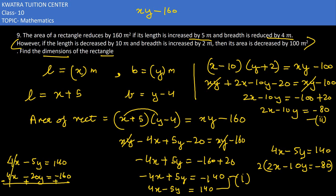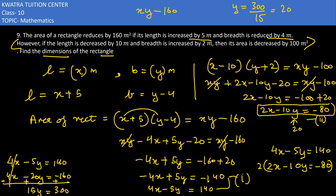After elimination, -5y + 20y = 15y, and on the right side 160 + 140 = 300, so y = 300/15 = 20. Substituting y = 20 into either equation, we get x = 60 meters. So the dimensions of the rectangle are length = 60 meters and breadth = 20 meters.